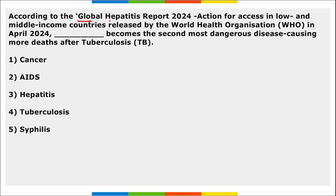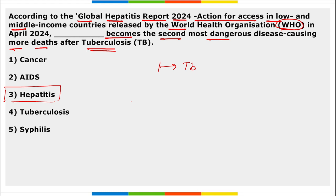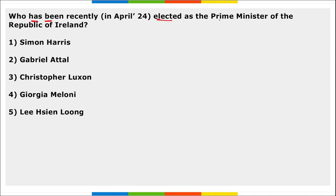According to the Global Hepatitis Report 2024 released by the World Health Organization in April, hepatitis has become the second most dangerous disease causing deaths, after tuberculosis. The first is TB and the second is hepatitis. This is the first consolidated WHO report on hepatitis cases.